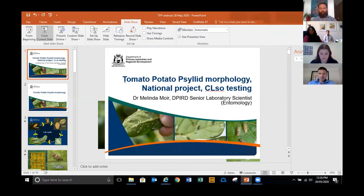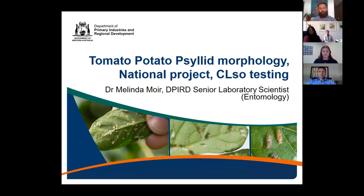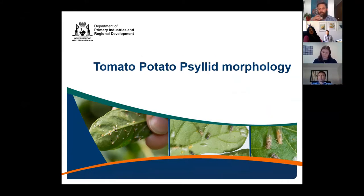Hi everyone. I'm going to be focusing on three aspects of TPP today: the morphology, the national surveillance project, and the mass CLSO testing in Western Australia. So let's move on to the morphology of TPP — I'll call it TPP, short for tomato potato psyllid.